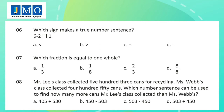Question 8: Mr. Lee's class collected 503 cans for recycling. Miss Webb's class collected 450 cans. Which number sentence can be used to find how many more cans Mr. Lee's class collected than Miss Webb's?